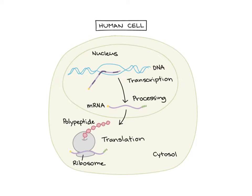This whole process illustrates what we call the central dogma: DNA contains the information to make proteins, but first we have to copy that message from DNA onto RNA through the process of transcription, and then the RNA will be translated into a protein at a ribosome. So two main big processes here: transcription and translation.